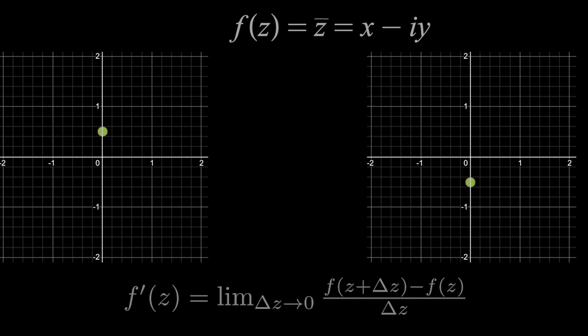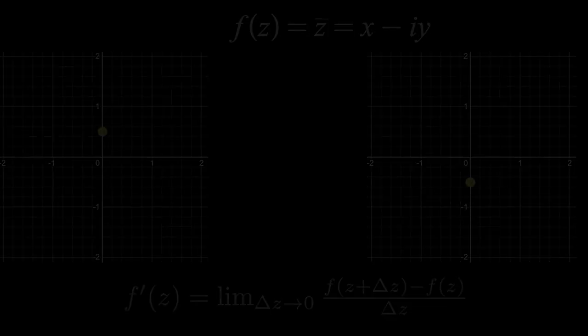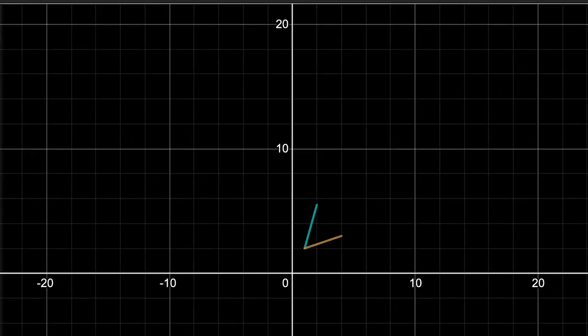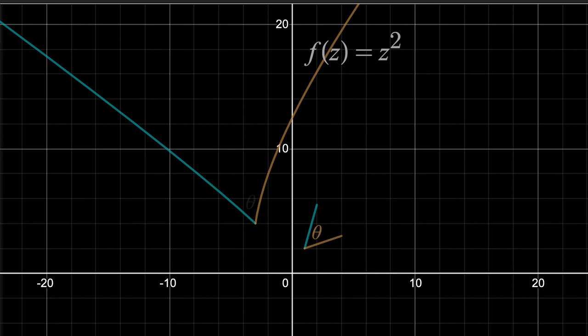Now, there are several interesting results that come from the complex derivative simply existing, but one of my favorites would be this here. If you have two paths in the complex plane that meet at some point, where the angle between them we'll call theta, then send them both through a function whose derivative exists and is non-zero at the intersection point, like z squared. The angle between the paths will not change, it'll still be theta. Yes, these resulting paths aren't even linear, but that angle refers to the one between the tangent vectors for the two paths at the intersection point.